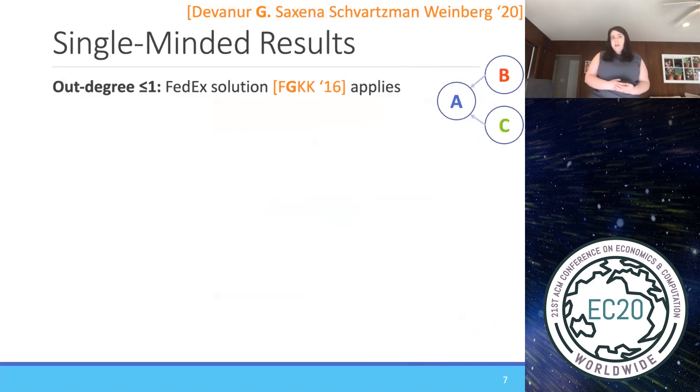Okay, so what do we do in our work? Well, first we have some special cases. The first special case is when the partial ordering in the DAG that represents it has out degree at most one. And here the FedEx solution just applies. Even though it's a partial ordering, if we have out degree at most one, then it turns out that we can show that the FedEx solution of Fiat et al. applies.